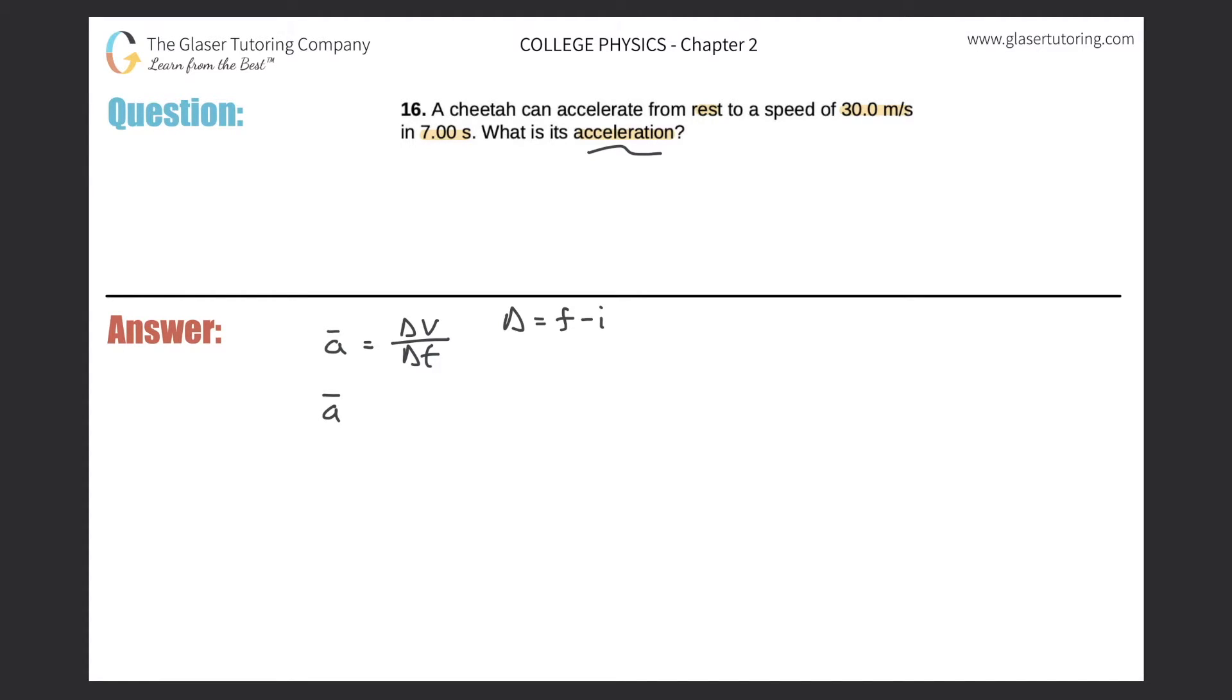So to calculate average acceleration, it would require us to know the final velocity and subtract it from the initial velocity, divided by the change in time, which could also be represented as the final time minus the initial time.